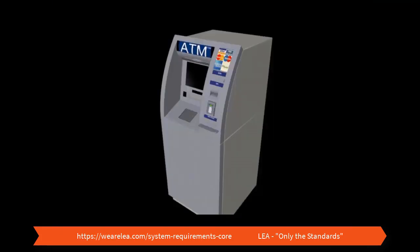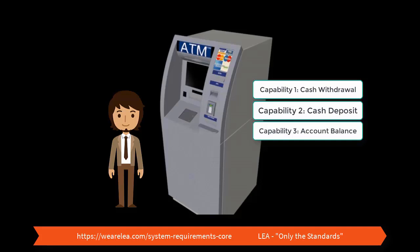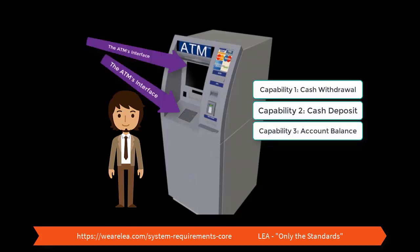Consider an ATM. There are three major components at work: the ATM's internal capabilities, the user's internal capabilities, and the screen and keypad that operate as a shared boundary between them.